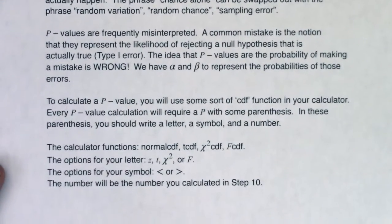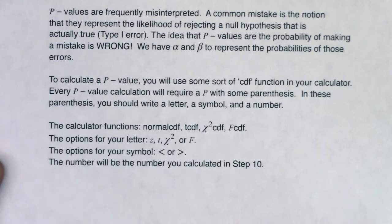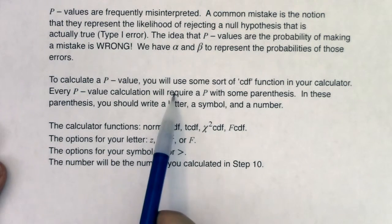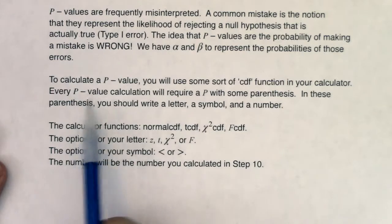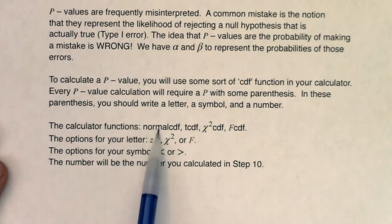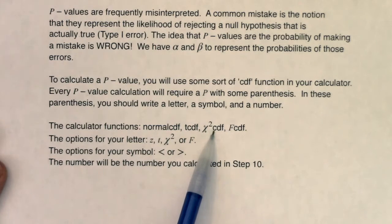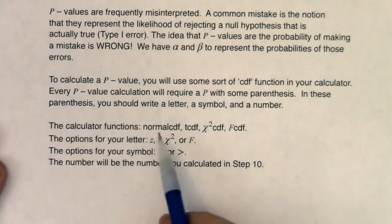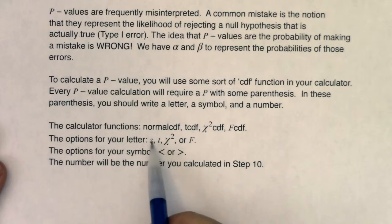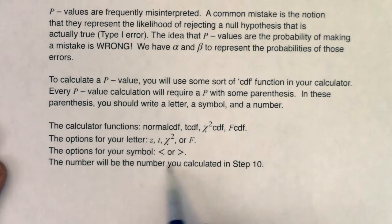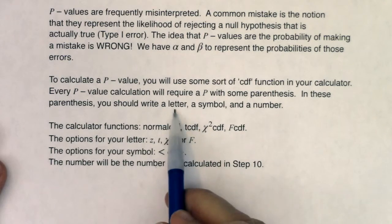To calculate a p-value, you need some sort of CDF function in your calculator. Every p-value calculation will require a capital P with parentheses, and inside those parentheses you write a letter, a symbol, and a number. We've seen normal CDF and TCDF. When we get to chapter 11, we'll pick up chi-squared CDF; chapter 13, FCDF. As we progress, your letters will be Z, T, chi-squared, or F. You'll have a greater than or less than symbol, and the number you put in is the number you calculated in step 10.